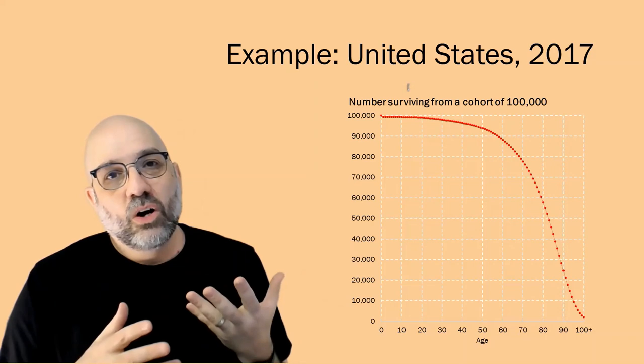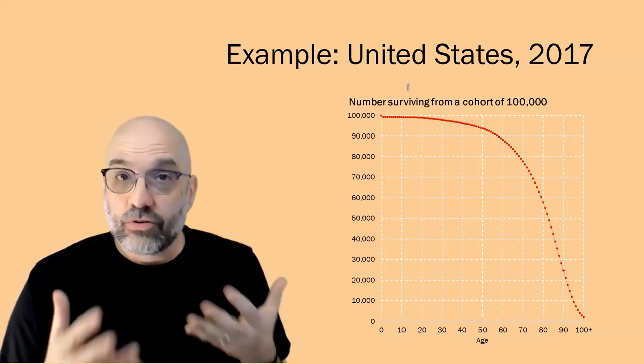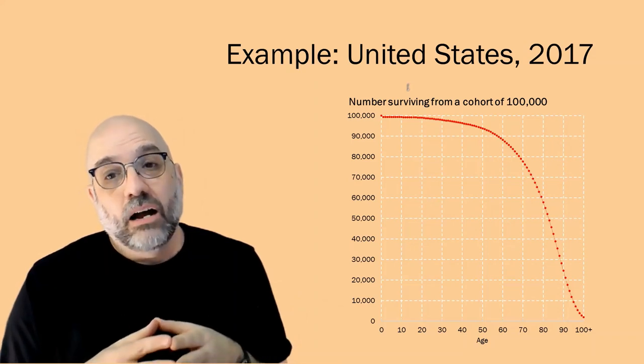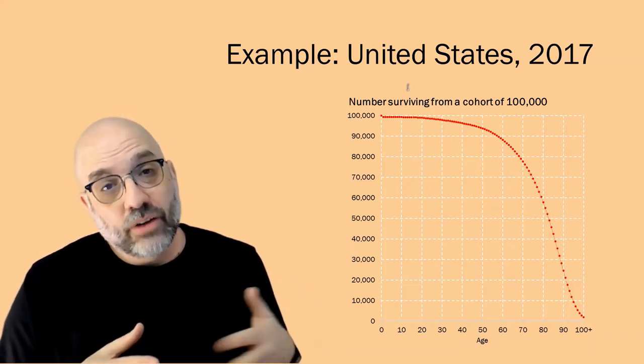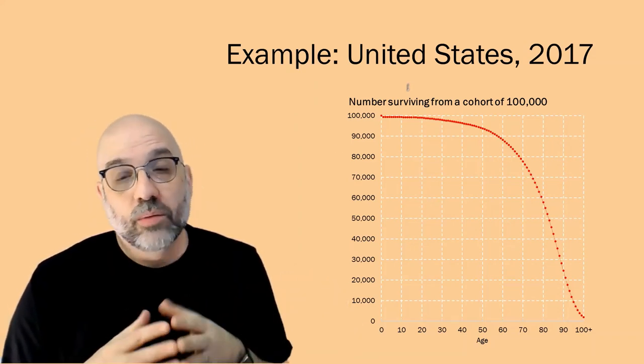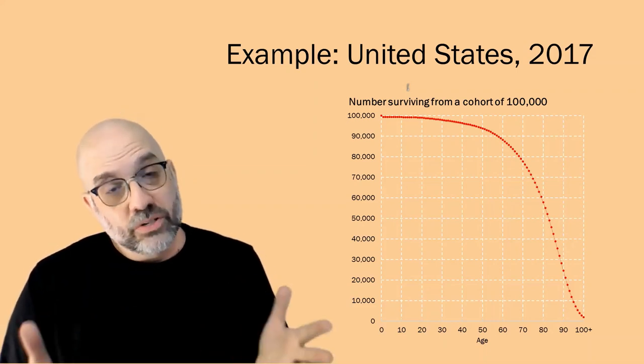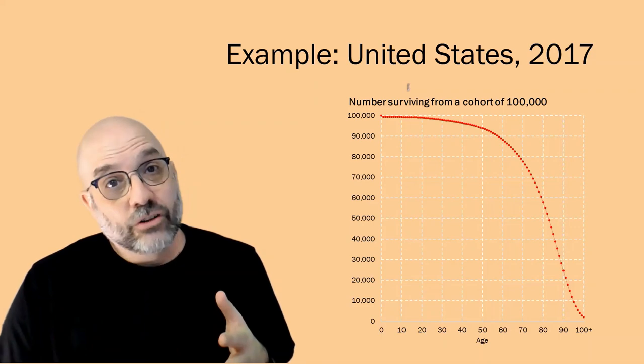You don't get below 90,000 of that 100,000 member cohort until almost age 60, and then you see the mortality rates as they rise. We start to lose more and more until you get eventually all the way down to zero members of the cohort left after age 100.